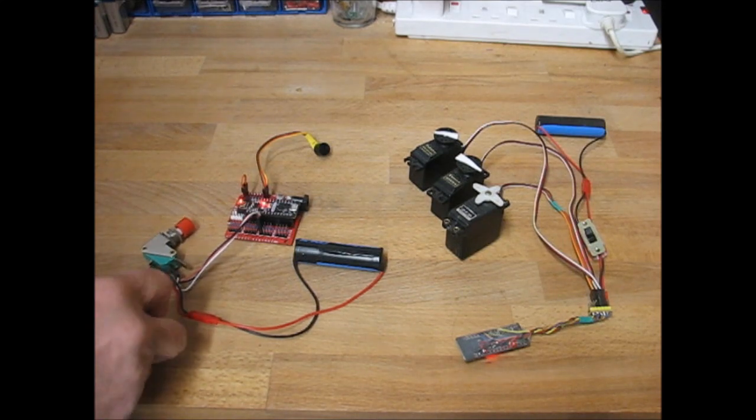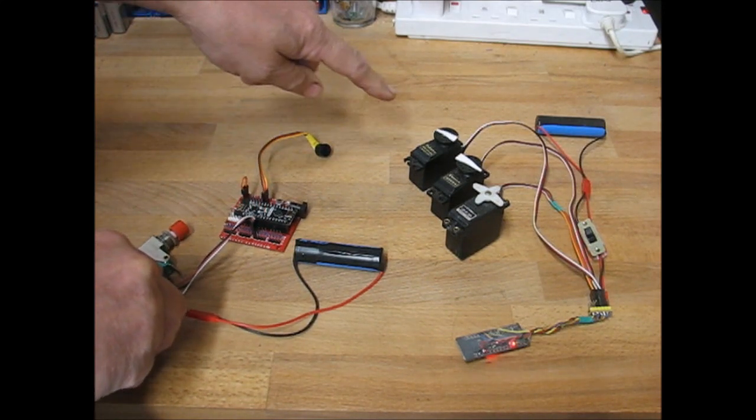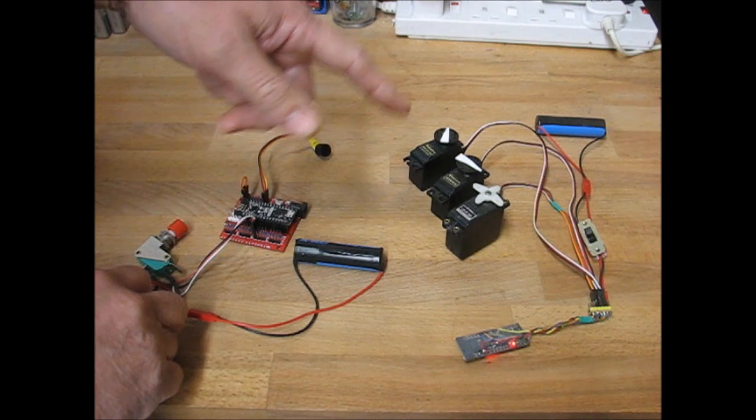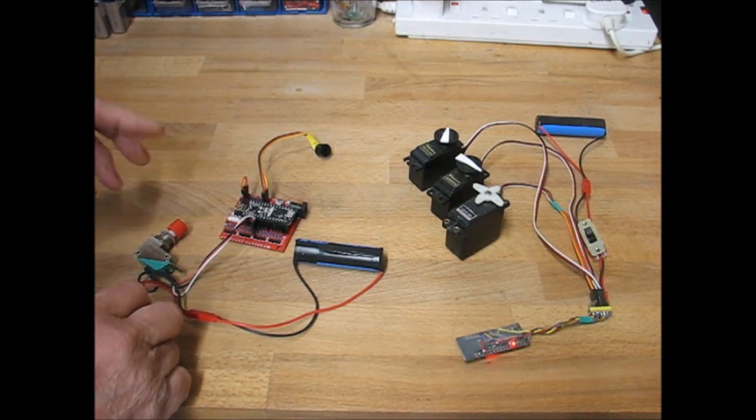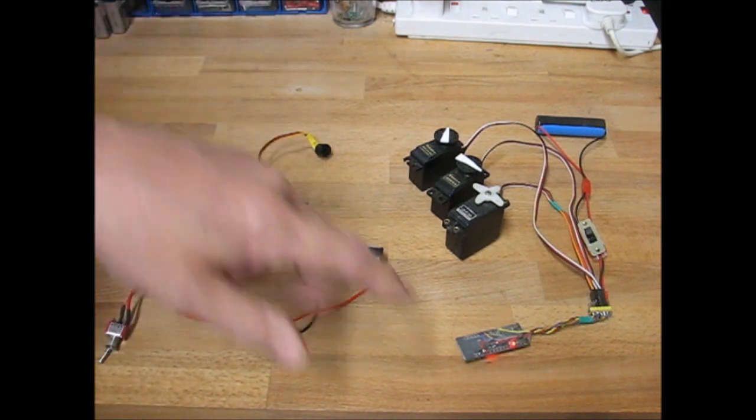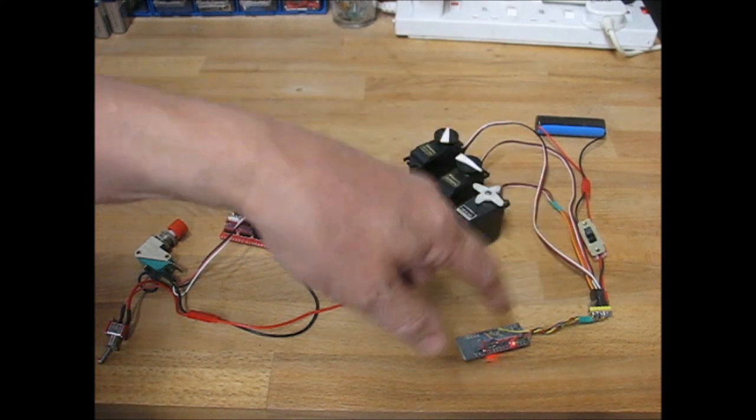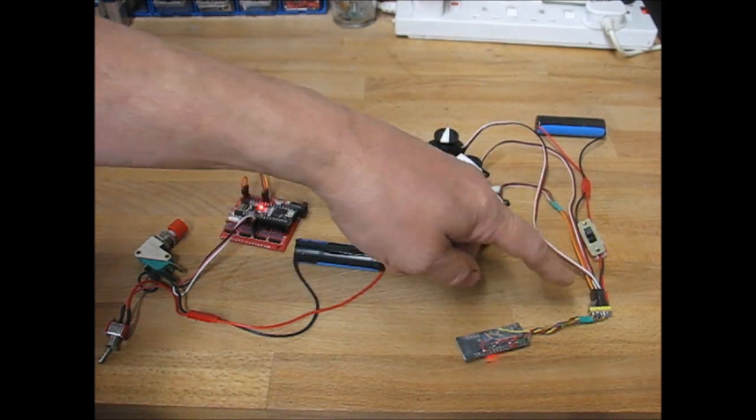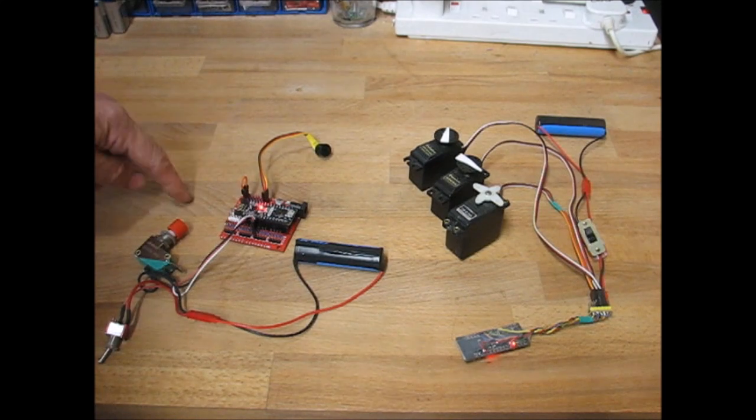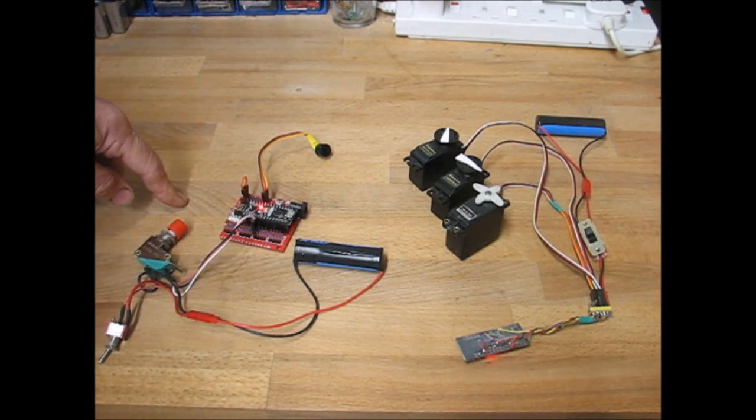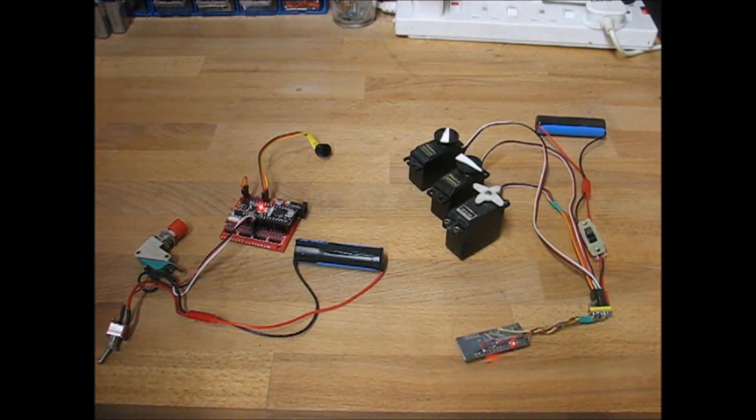If I switch off we've got full failsafe. Watch the throttle servo. It's failsafe on all channels and it's pre-settable so you can put your controls where you like and then just either make a link on the receiver header there or actually you can do it from the transmitter as well. You can press a button on the transmitter and that will set the failsafe to those positions.